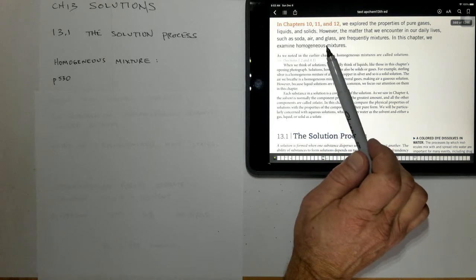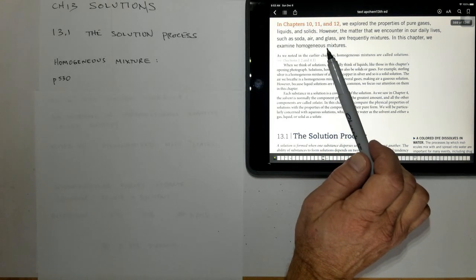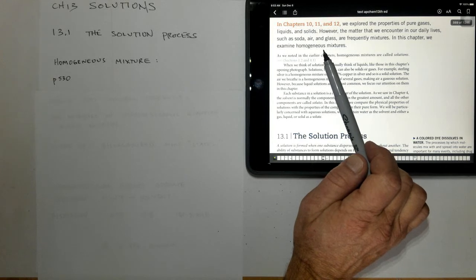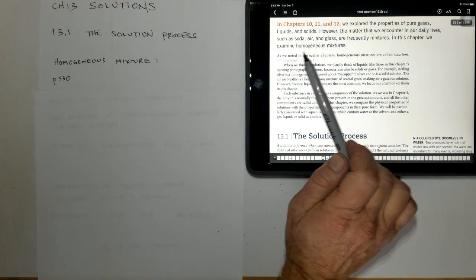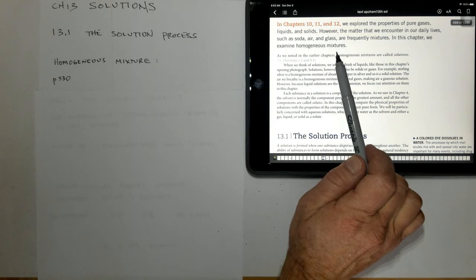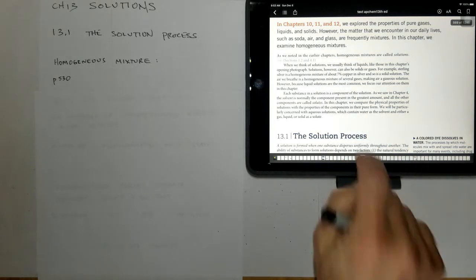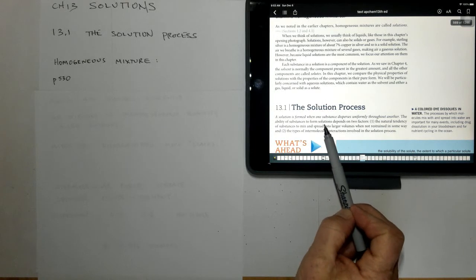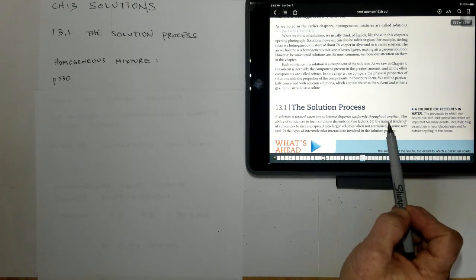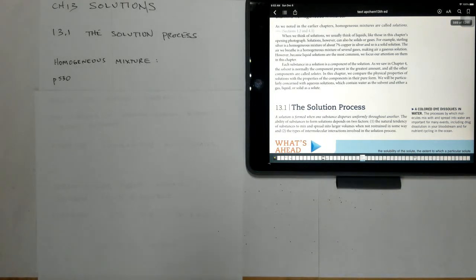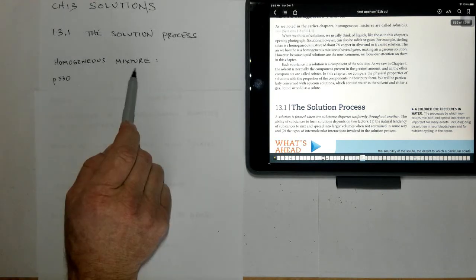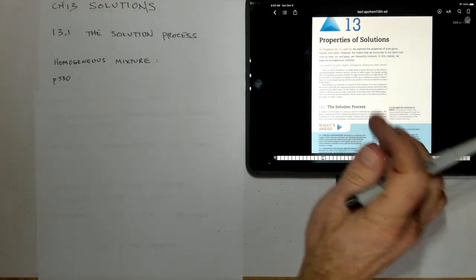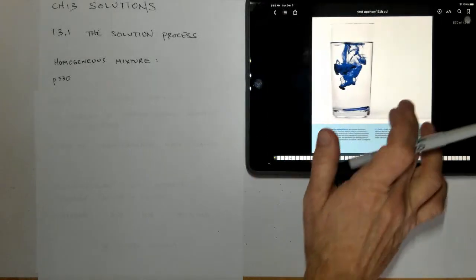But now what we're going to do is take a look at what matter really is like in the world, and that's that it's all mixed up. And many times it forms what's called a solution, which is known as a homogeneous mixture. So the solution process happens when one or more substances disperses uniformly throughout the other to make a homogeneous mixture. And this happens to be on page 530 of your textbook.